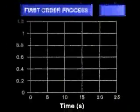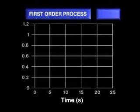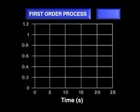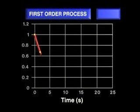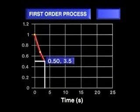In a first-order process, the rate of change of concentration of a substance is proportional to the concentration of the substance at that point in time. Suppose we begin with a unit concentration and follow the disappearance of the substance over time.